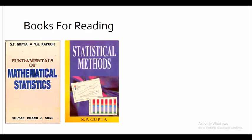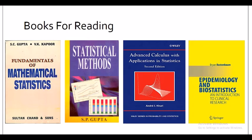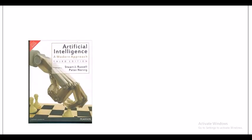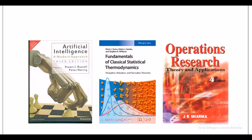Later on, you can move on to books like 'Advanced Calculus with Applications and Statistics,' and for those interested in biostatistics or biology, 'Epidemiology and Biostatistics.' Some of these books are available as PDF downloads. Other suggestions include books on artificial intelligence, fundamentals of classical statistical thermodynamics, and operations research. As a beginner you can highly depend on these books. I hope all of you have enjoyed this session, thank you.